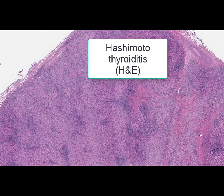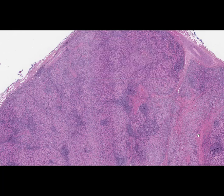On this slide again we can see a thyroid gland, stained by hematoxylin and eosin. The name of this slide is Hashimoto's thyroiditis. Same as Graves' disease, Hashimoto's thyroiditis is an autoimmune disease. However, in contrast to Graves' disease, it is accompanied by severe hypothyroidism and expressed typical morphological changes.